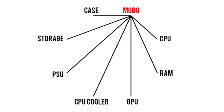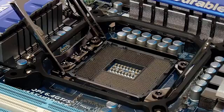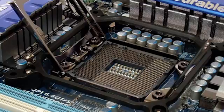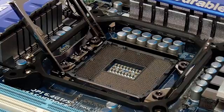Now let's move on to the motherboard. Since this component functions as kind of a central hub, it's no surprise that it requires compatibility with every other part on our list. We already discussed its association with cases. When it comes to the motherboard and CPU, the most important factor to allow compatibility is the socket type.